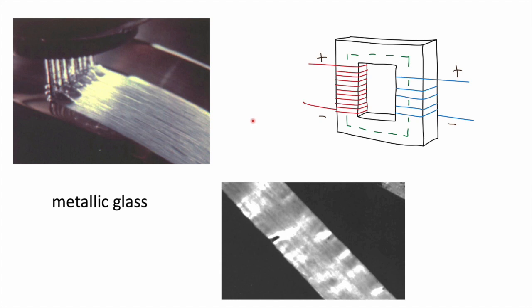A glass has a random arrangement of atoms — it's a solid phase with isotropic properties and no structure in the sense associated with crystalline materials. This metallic glass is made by pouring liquid metal onto a rotating copper wheel to generate a continuous foil. The cooling rate is very large, so there is no opportunity for the liquid to crystallize, and the atoms become configurationally frozen and form a glass.